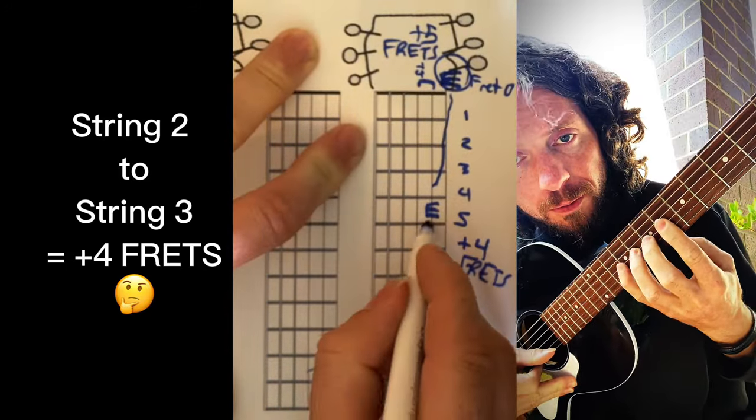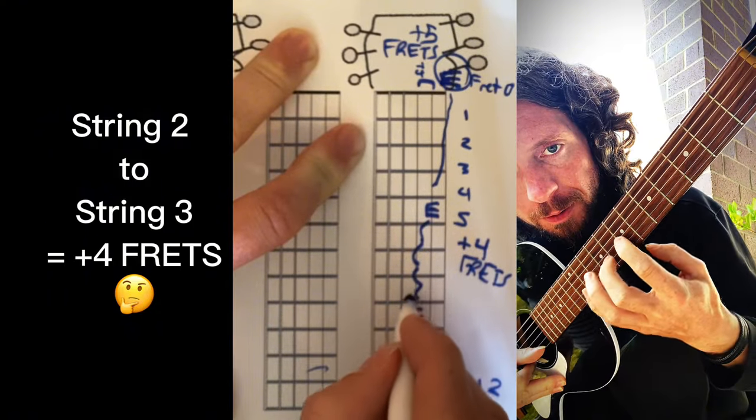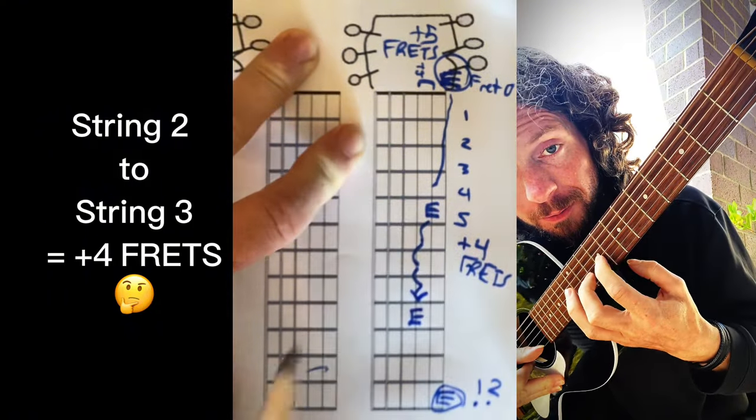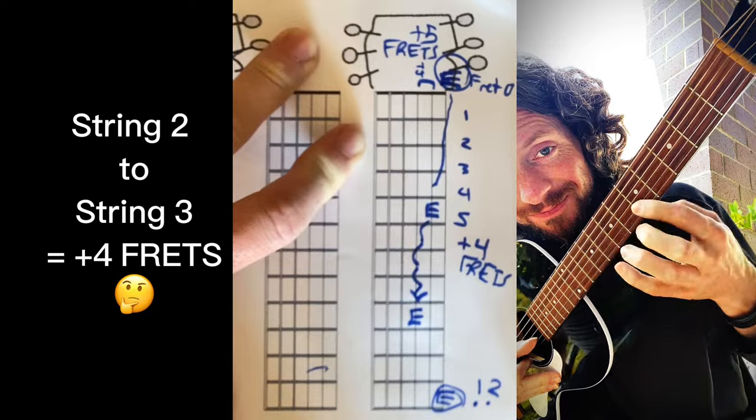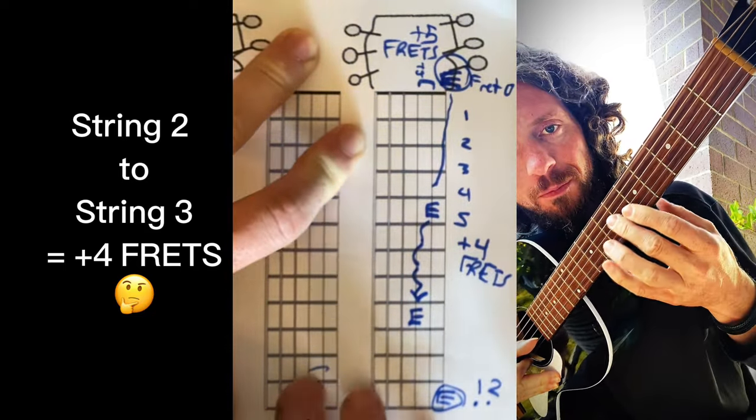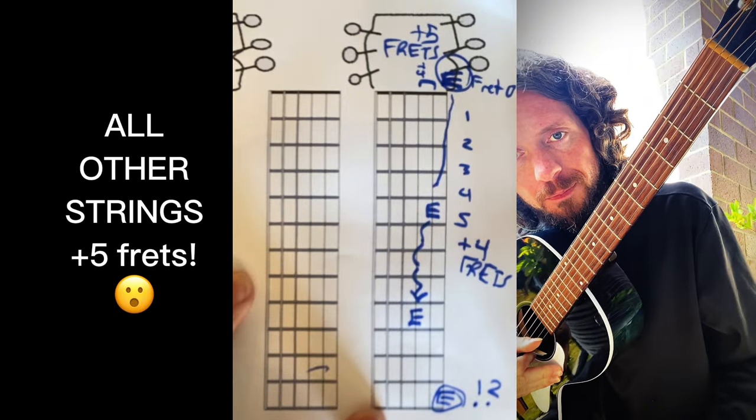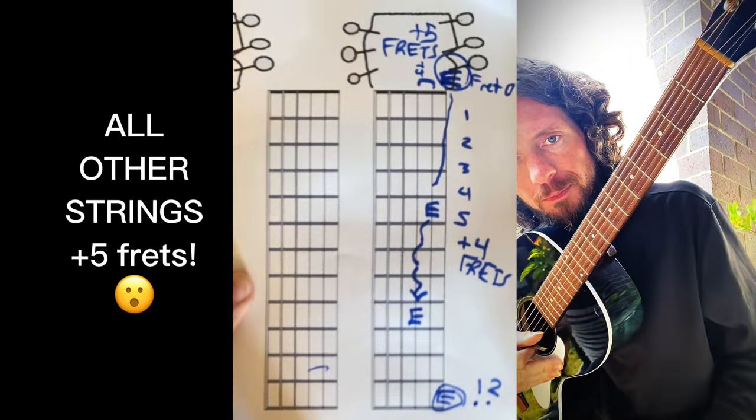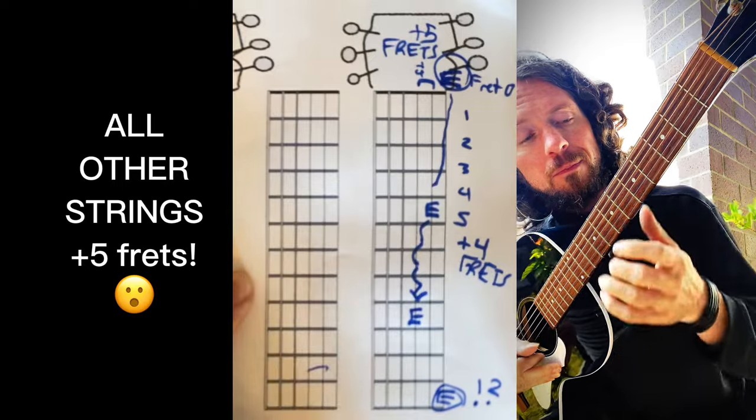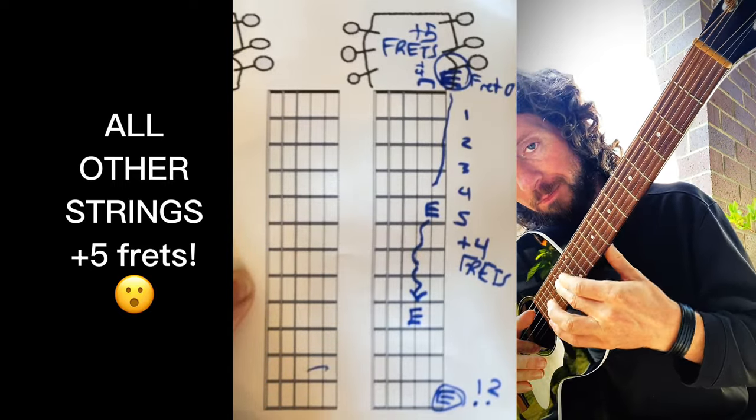Now each string is going to continue that pattern, so the next string over we would plus five, and then we would continue from there. But let's just start with those there. I'm going to show you another way to look at it.